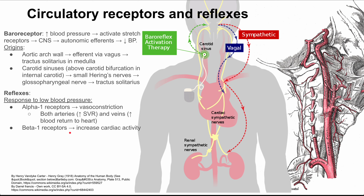Beta-1 receptors increase cardiac activity. They can impact heart rate by hitting the pacemaker cells. They'll also impact cardiac contractility — the myocardium itself. So increased cardiac activity leads to increased cardiac output and blood pressure.